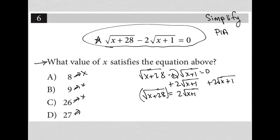Then I'd square both sides, leaving me with x plus 28 is equal to 4 parentheses x plus 1, which leads to x plus 28 equals 4x plus 4.